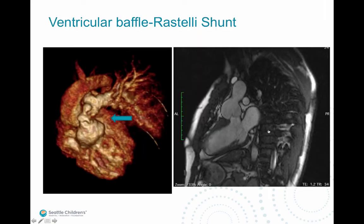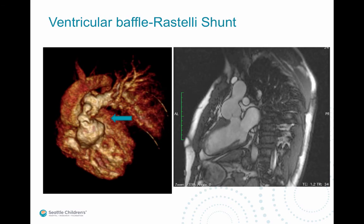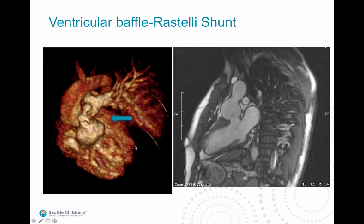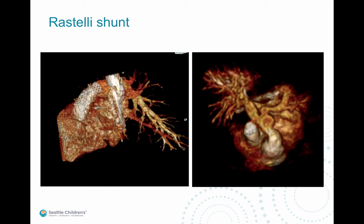The Rastelli procedure, as described earlier, is where a conduit is placed through the VSD and a patch is made to close the VSD beyond the aorta, directing blood flow from the systemic ventricle into the aorta. On the left-hand side you see an RV to PA conduit, also part of the procedure, with some narrowing. Another patient with D-transposition of great vessels has a metallic stent placed in the conduit to open stenosis that occurred.